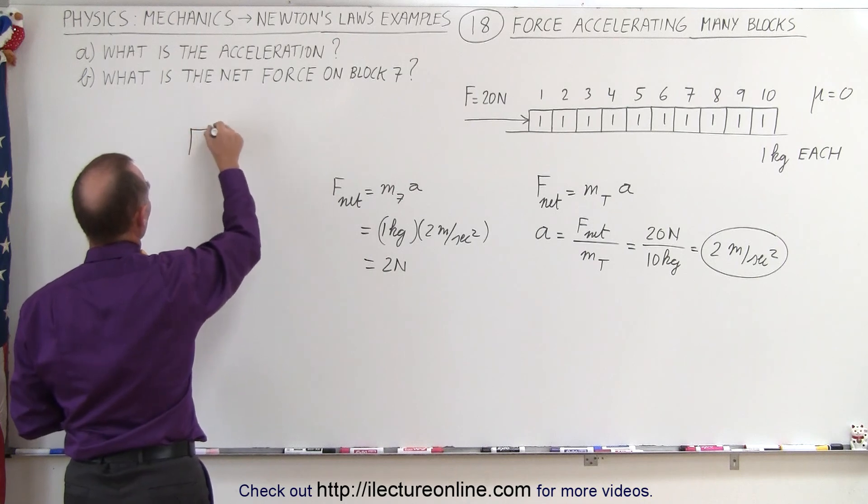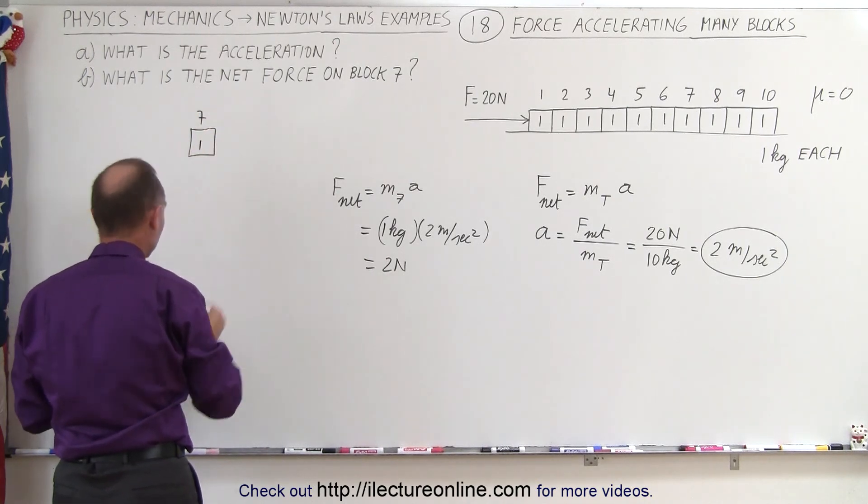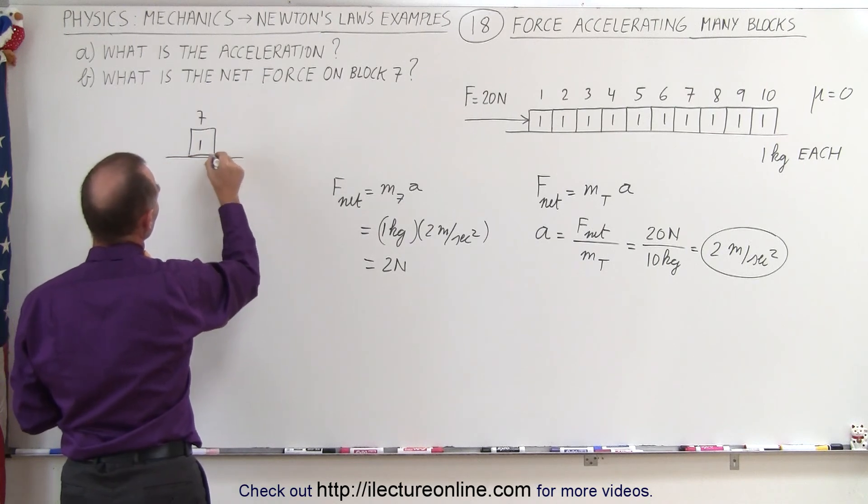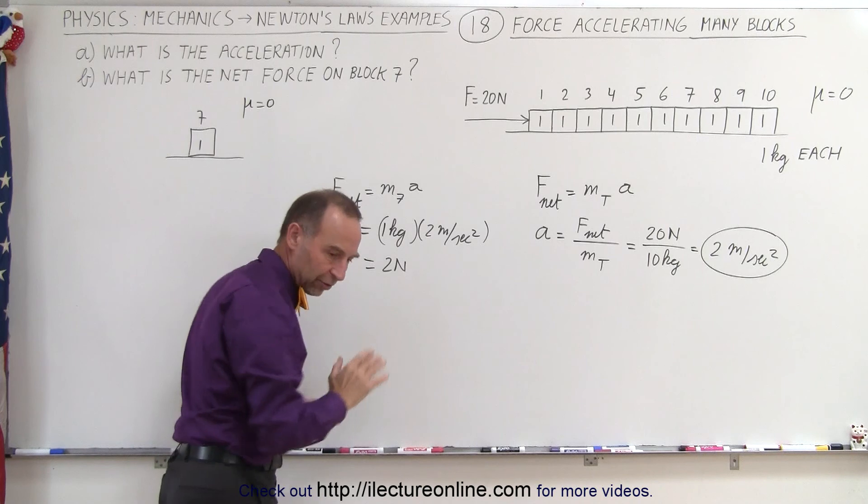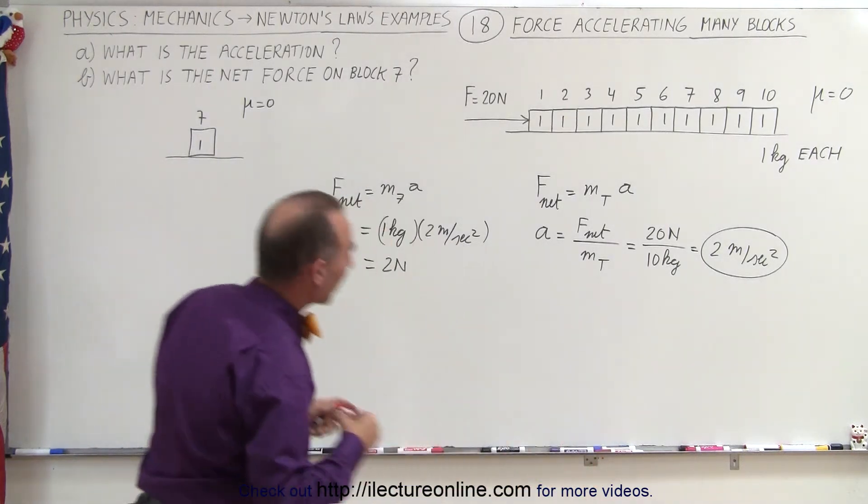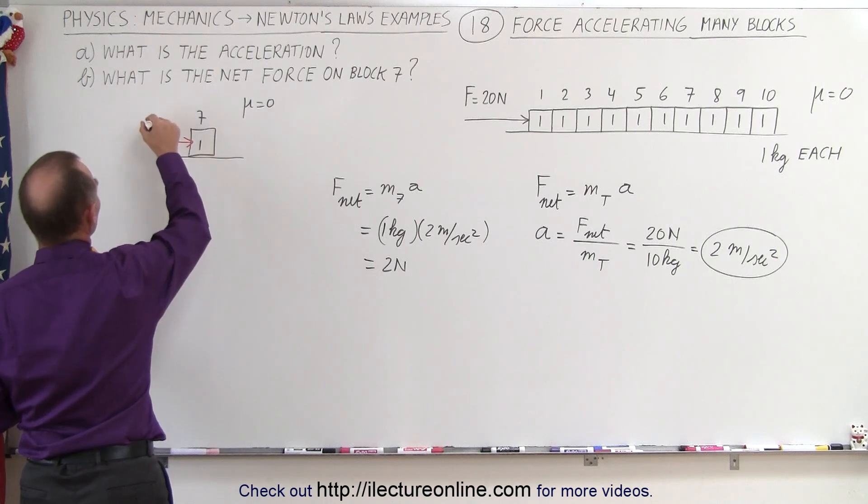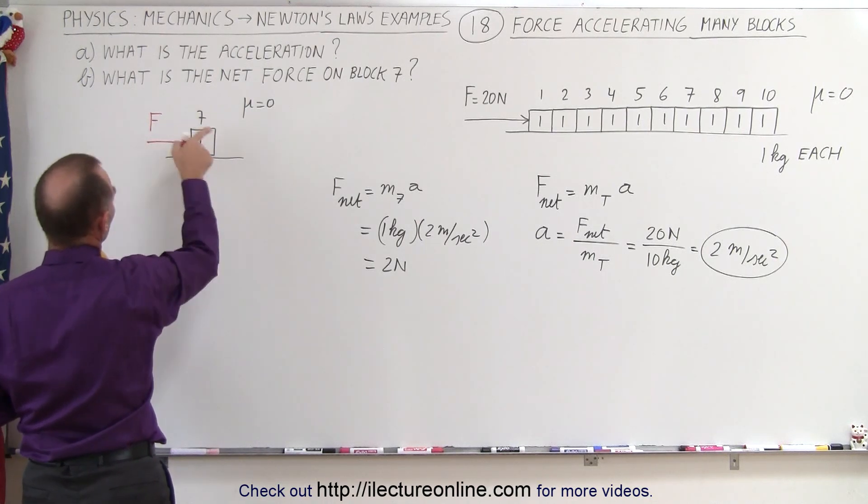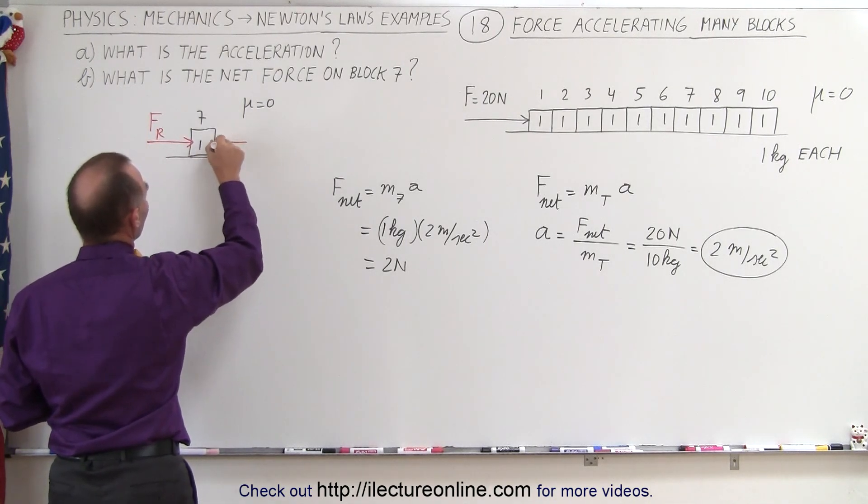Or what we can do is we can take a look at the free body diagram of block number 7, which is 1 kilogram, and we know that it's on the floor right here, there's mu equals zero, and we can say that there's a force, and there's my red pen right over here, so we know that there's a force pushing from the left, so force from the left, or force to the right, I guess, we'll just say force to the right, and we have a force to the left.